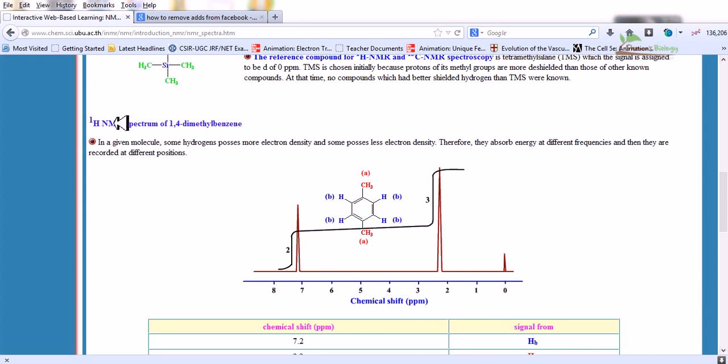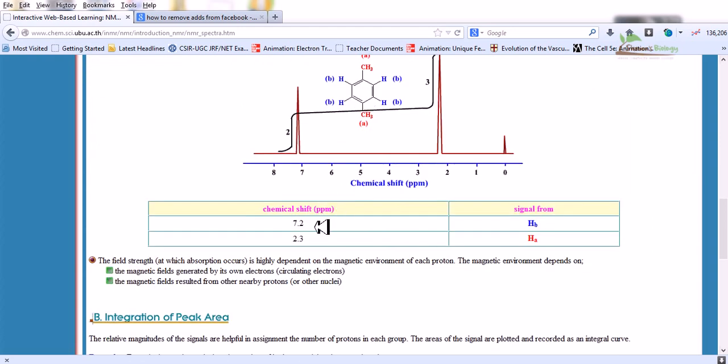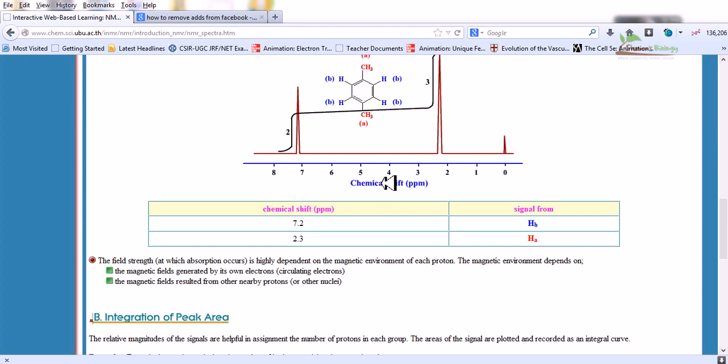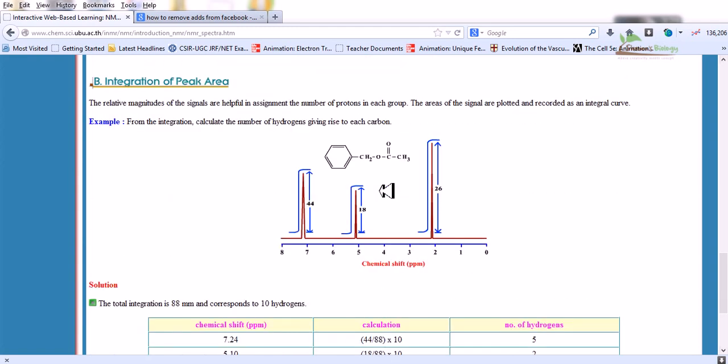If you utilize H1 NMR spectrum of 1,4-dimethylbenzene, in a given molecule some hydrogen possesses more electron density and some possesses less electron density. Therefore they absorb energy at different frequencies and are recorded at different positions. Here you can find the chemical shift. At 7.2 PPM, the signal is coming from HB, these hydrogen regions. At the chemical shift of 2.3 PPM, it is coming from HA, the hydrogen of the CH3 group. The field strength is highly dependent on the magnetic environment of each proton. The magnetic environment depends on the magnetic field generated by its own circulating electrons and the magnetic field resulted from other nearby protons or other nuclei.